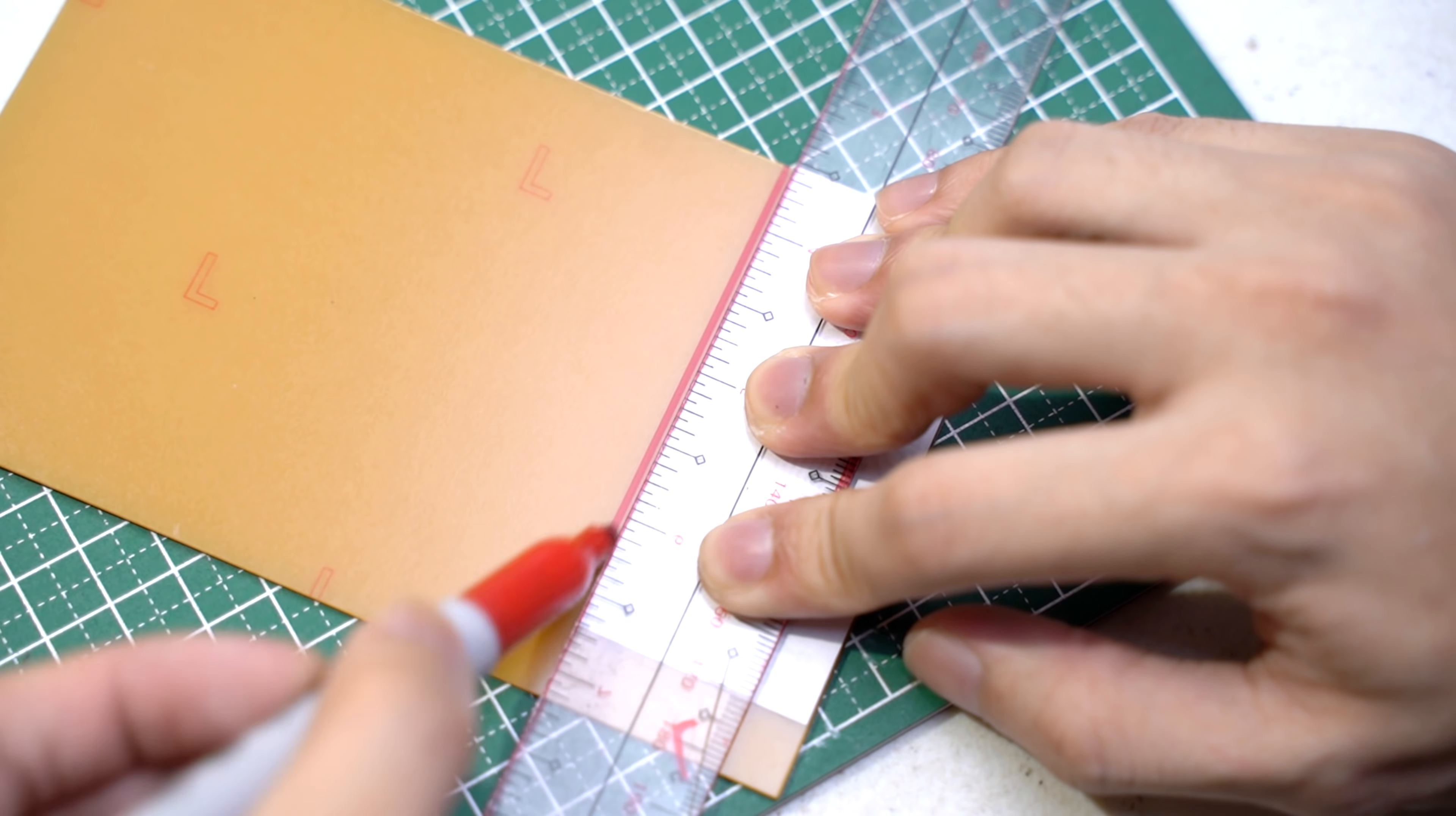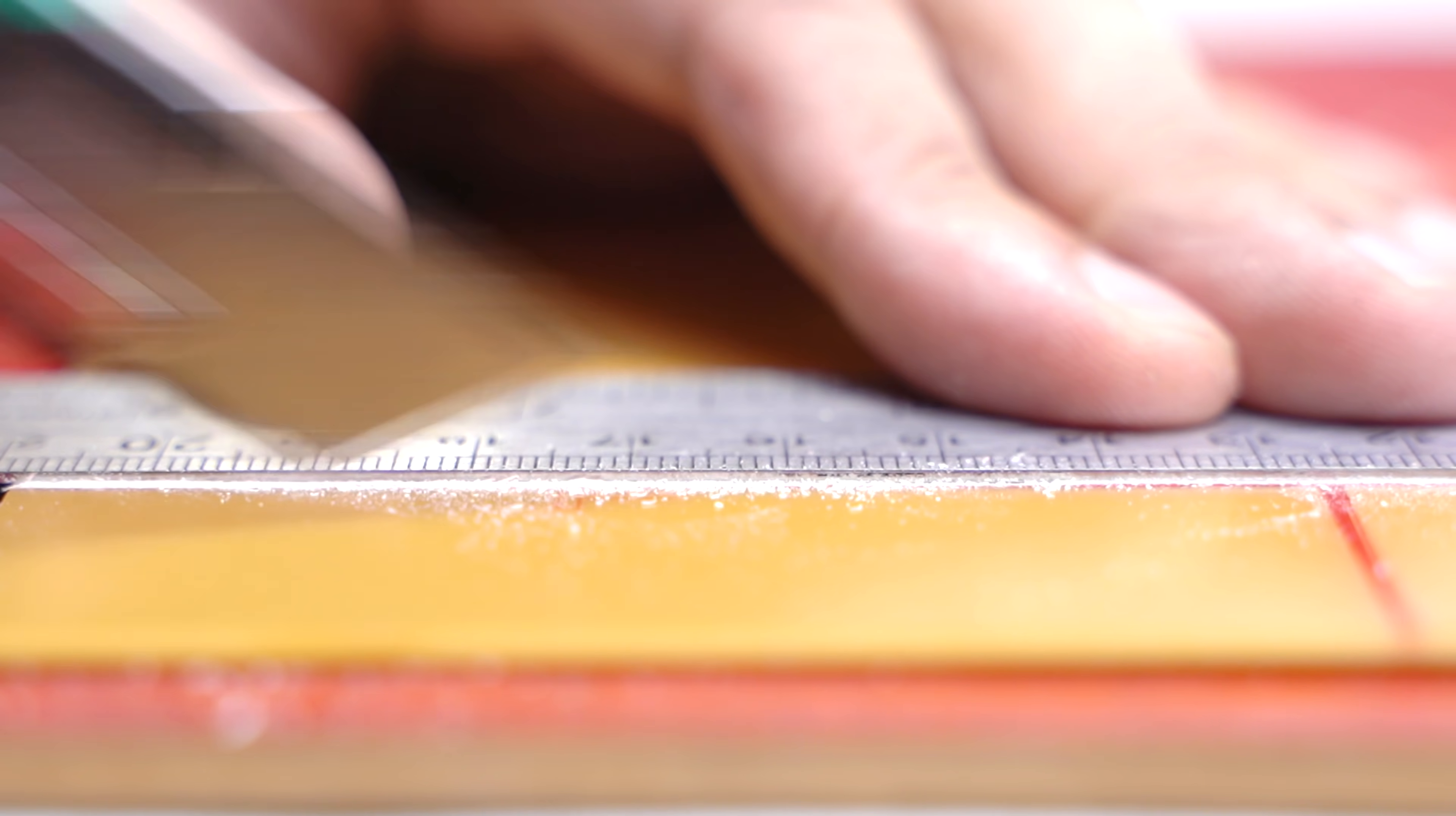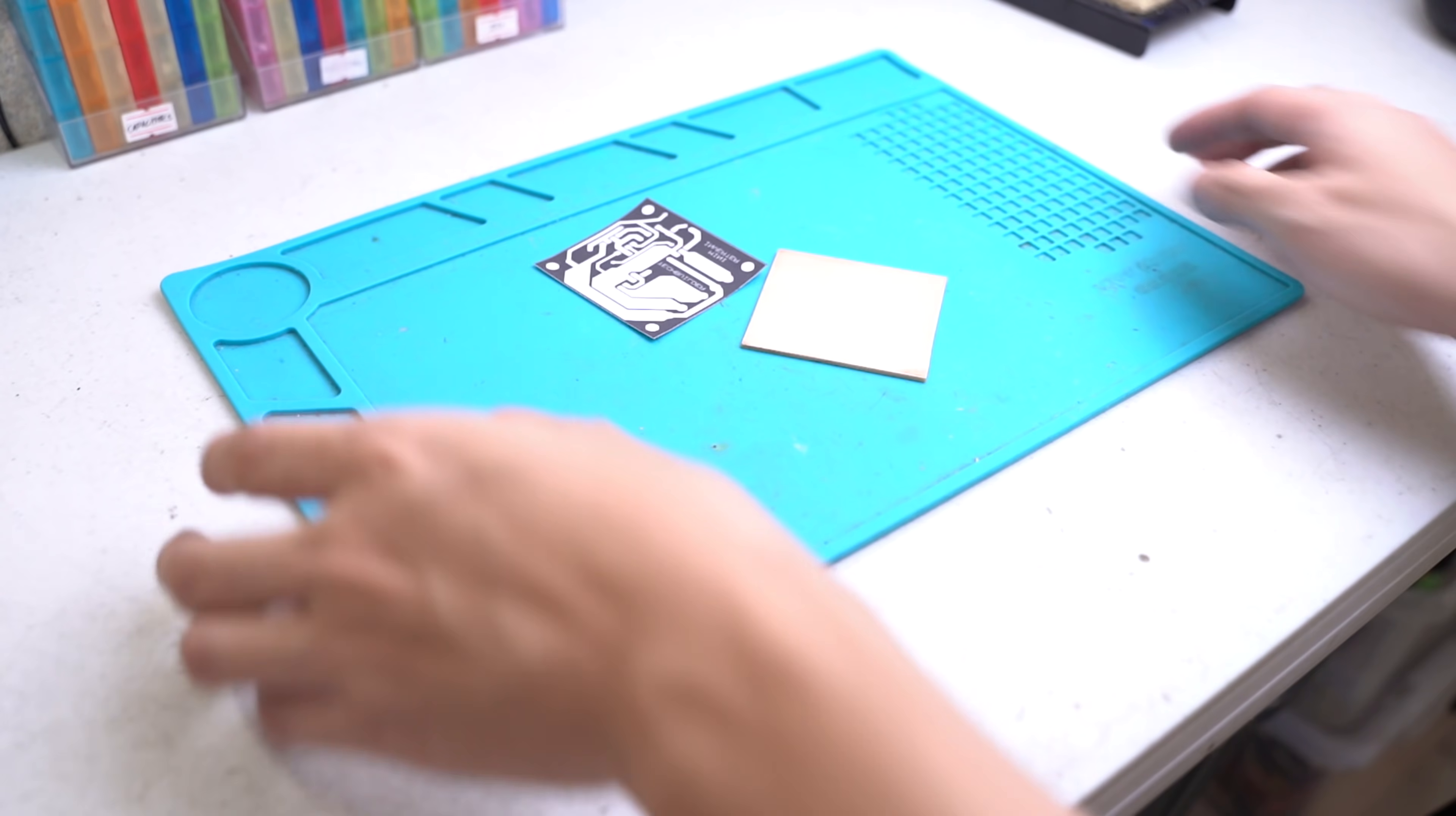For phenolic-based PCB boards, you can cut the board by scoring it using the blunt edge of your cutter. Score it for around 20 times and place your PCB at the edge of your table. Use a book and press it against the table and carefully snap it. For FR4 fiberglass PCBs, you can use a hacksaw or some shears to cut it.